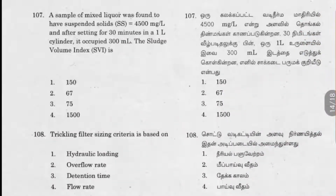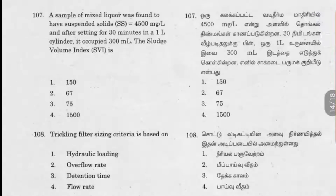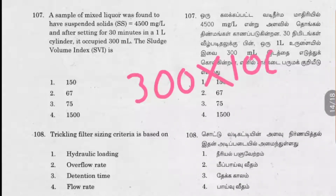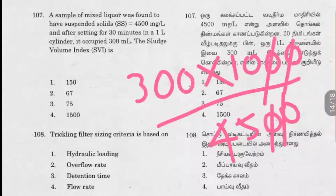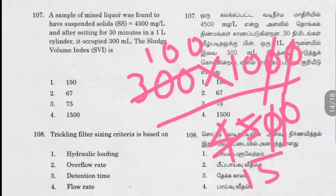Question 107: A sample of mixed liquid was found to have suspended solids of 4500 mg per liter, and after settling for 30 minutes in a 1 liter cylinder it occupied 300 ml. The sludge volume index formula is: volume occupied into 1000 divided by suspended solids. So 300 into 1000 divided by 4500 gives 300 by 45, which is 1000 by 15, approximately 67. Option 2 is the answer.